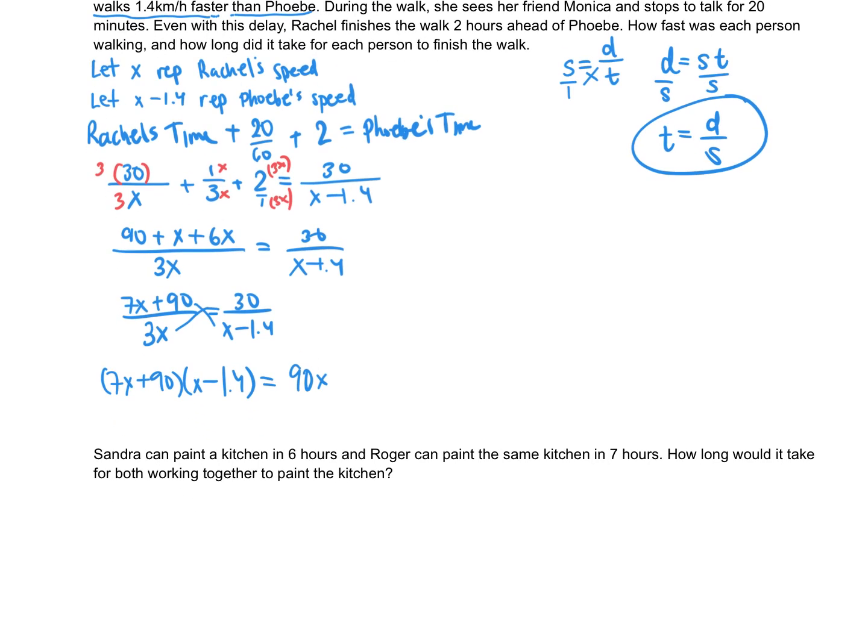Okay, so these are going to get multiplied, which means I'm going to have to do some proper distributive property here. And then the 3x and the 30 will get multiplied. To do my distribution, I'll have 7x squared minus 9.8x plus 90x minus 126 equals 90x. When I bring this 90x over to the other side, it becomes negative, so the 90x's cancel out. So what we actually have is 7x squared minus 9.8x minus 126 equals 0.